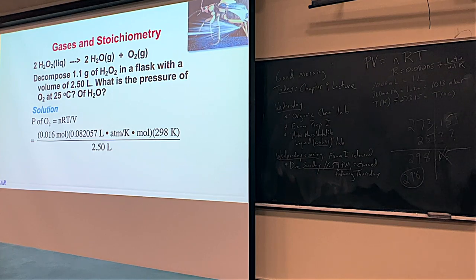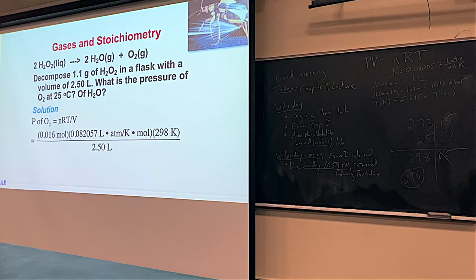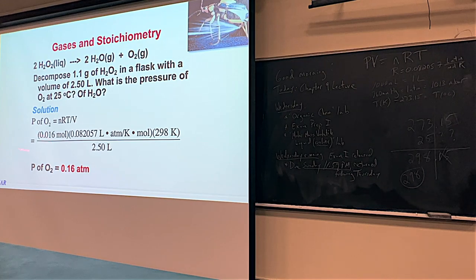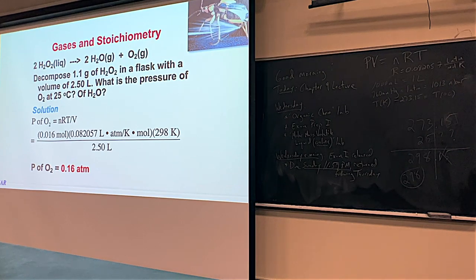For oxygen, P equals NRT over V by rearranging the ideal gas law. N is 0.016 moles, R is 0.082057, temperature is 298 Kelvin, and volume is 2.50 liters. To 2 significant figures — because of the moles — the pressure is 0.16 atmospheres.